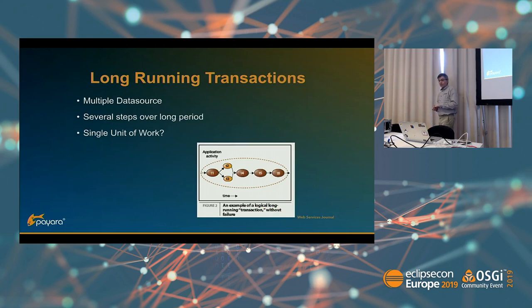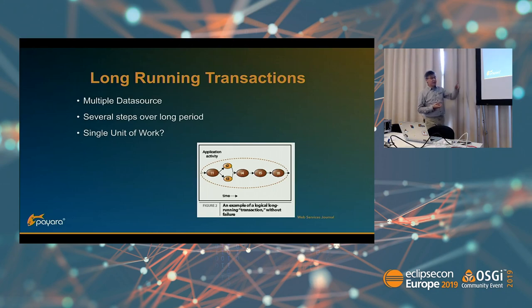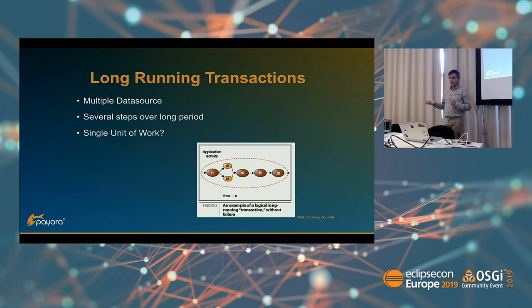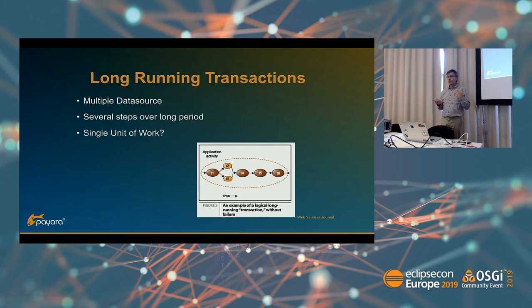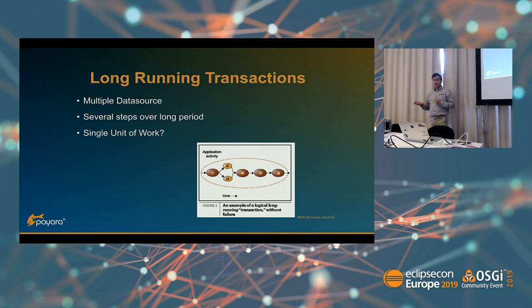Another issue with transactions is what people call long-running transactions. If you have a business process with different steps, each step may be done by another person or on another day. How do you define the single unit of work? Do you only store data at the end and hope the first step still contains valid data and that no one else has changed it? Long-running transactions are also an issue in the traditional world and are linked with microservices, since each step can be represented by a microservice.